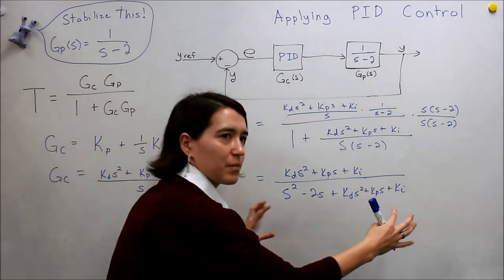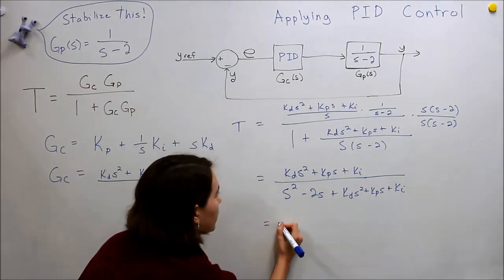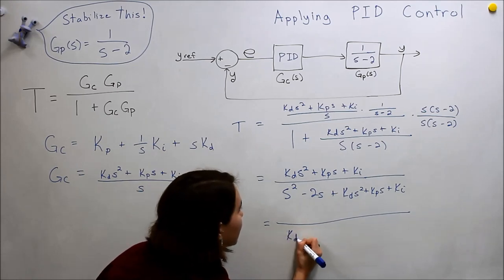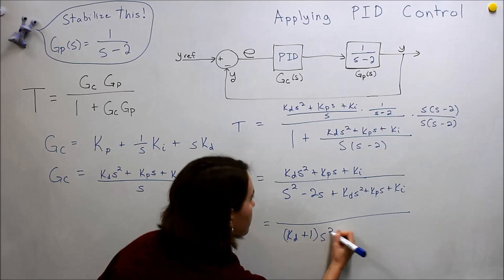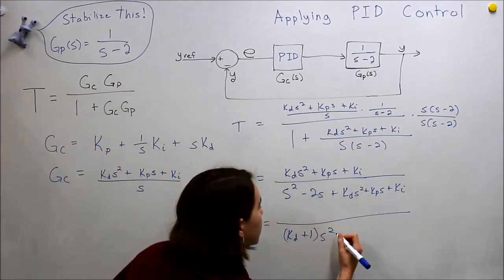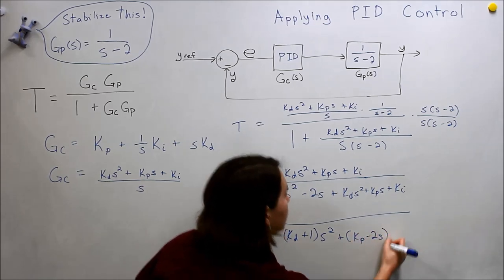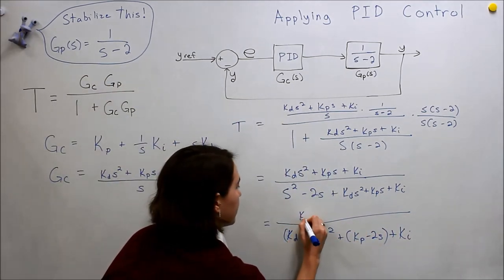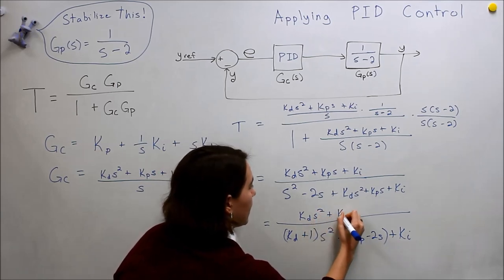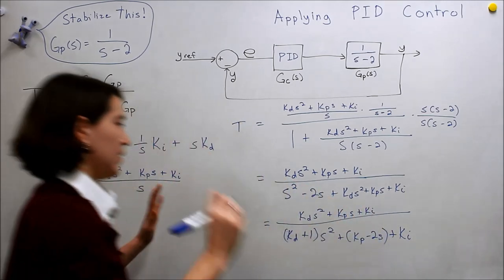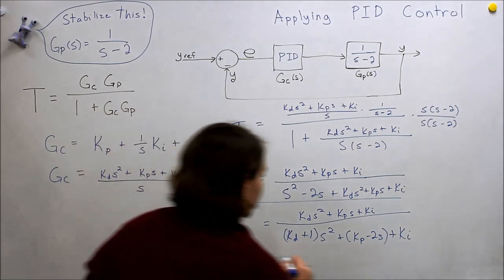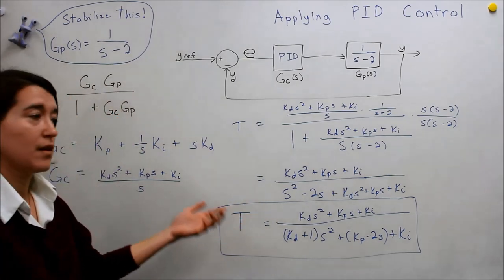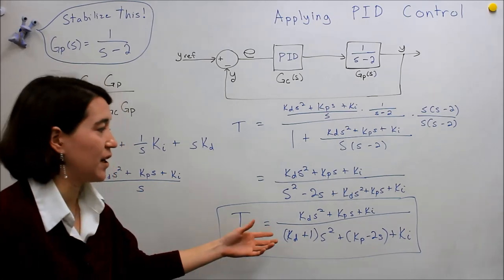And now, let's in the denominator, let's bring common terms together. So we'll end up with KD plus 1, s squared, and then let's look at the s's. So we have these two values here. So it's KP minus 2 s, and then we have a KI, plus KI. And the numerator here will be the same: KD s squared, plus KP s, plus KI. So here is our overall transfer function, implementing PID control. This is before we have not chosen the values of our coefficients. So this was what, once we picked those values, we would plug it in here, and this would be our transfer function.